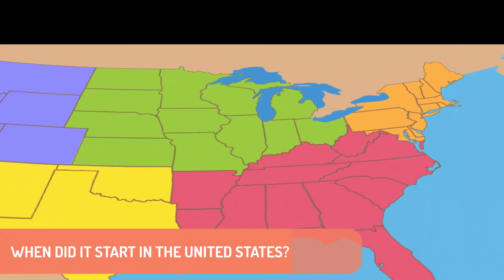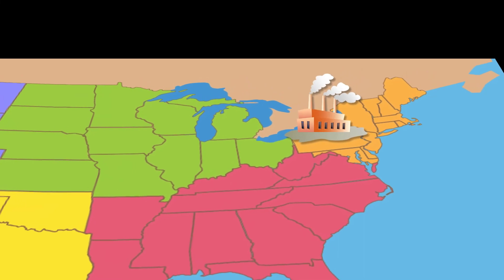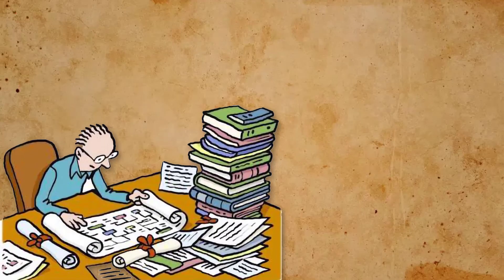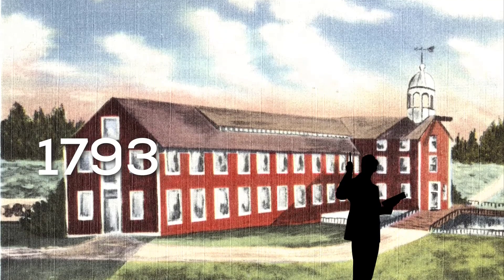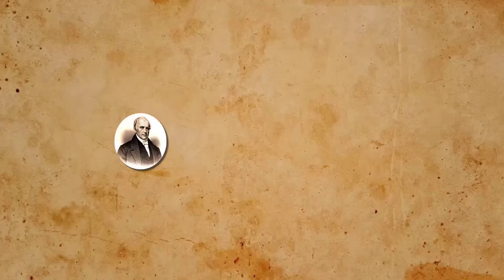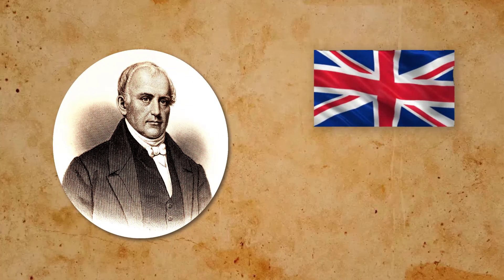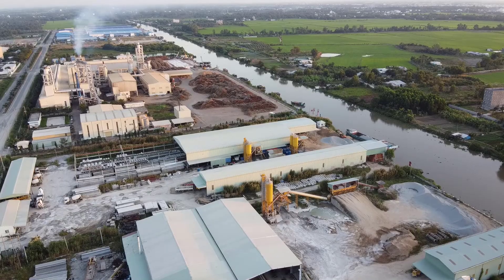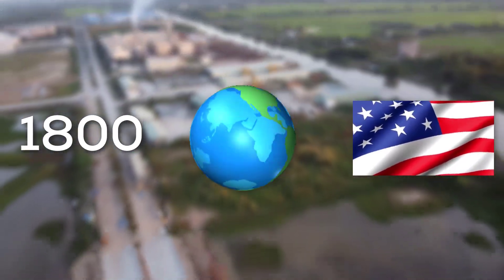The early part of the Industrial Revolution in the United States took place in the Northeast and the New England region. Many historians place the start of the Industrial Revolution with the opening of Slater's Mill in 1793 in Pawtucket, Rhode Island. Samuel Slater had learned about textile mills growing up in England and brought this knowledge to the United States. By the end of the 1800s, the United States had become the most industrialized nation in the world.